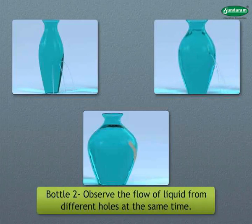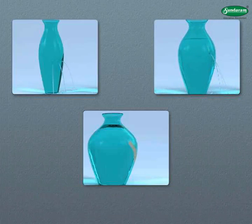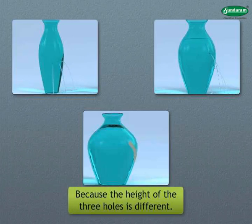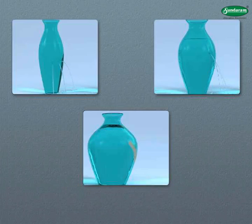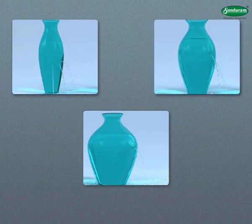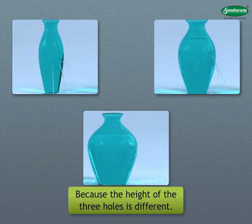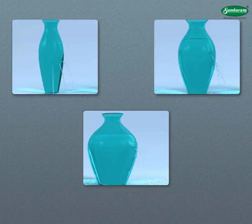The flow of water from all three holes of bottle one is the same. Then remove the tape from bottle two and observe the flow of liquid from different holes. The pressure of flow from the three holes will be different because the heights of the three holes are different. Similarly, observe the flow from bottle three — the pressure differs because the heights of the holes are different and pressure depends on the density of the liquid.